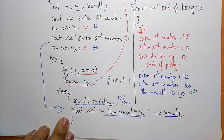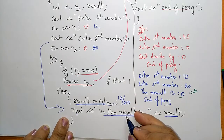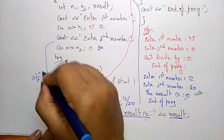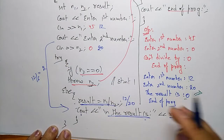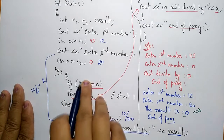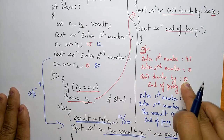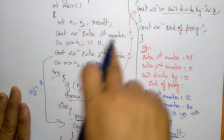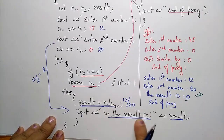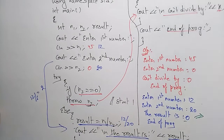Suppose if you take inputs like 12 divided by 6 — it just prints 'the result is 2'. So if you enter values like 45 and 0, it prints 'can't divided by 0'. If you enter valid values, it prints the result. This is the exception handling example using try, catch, and throw.